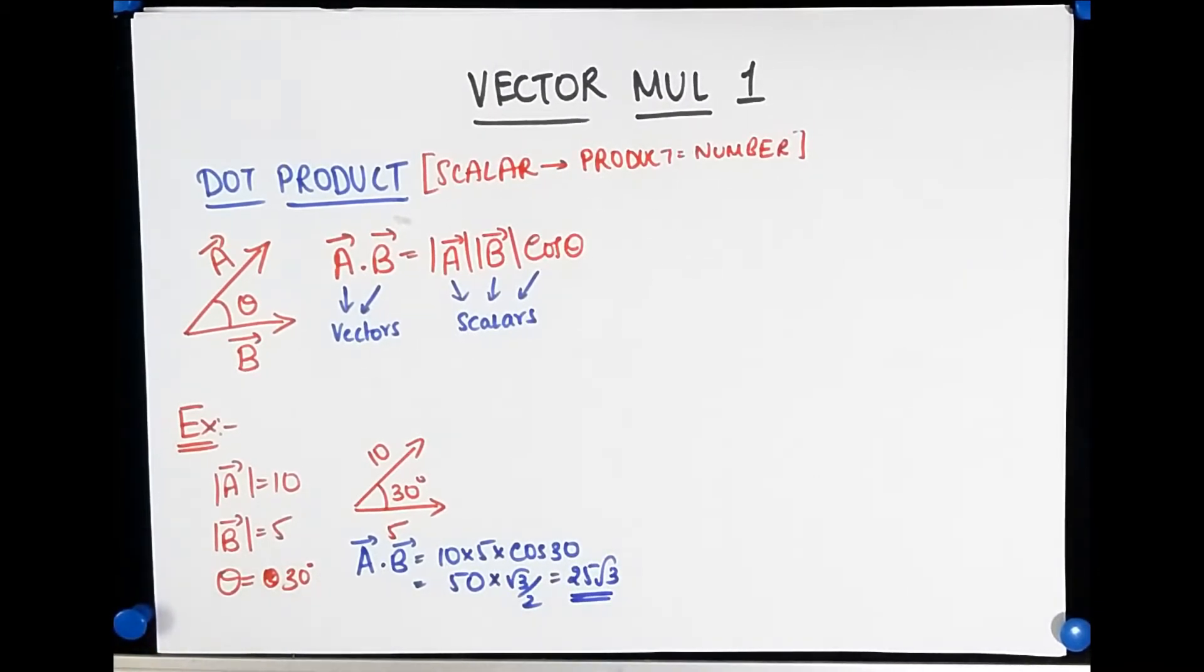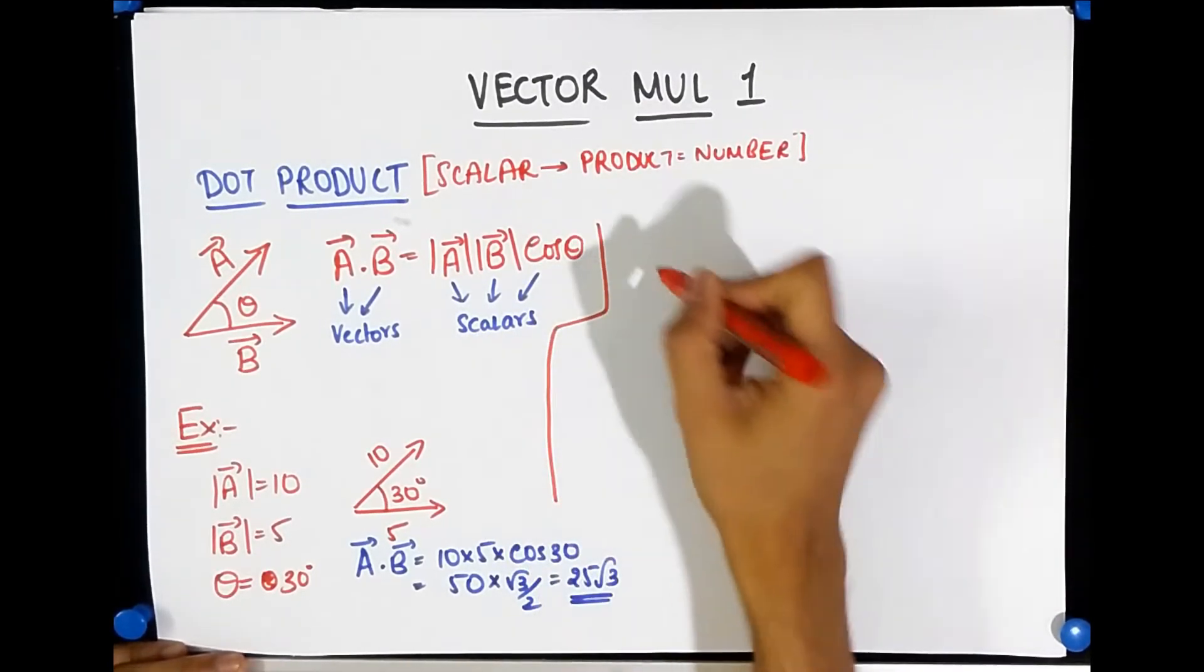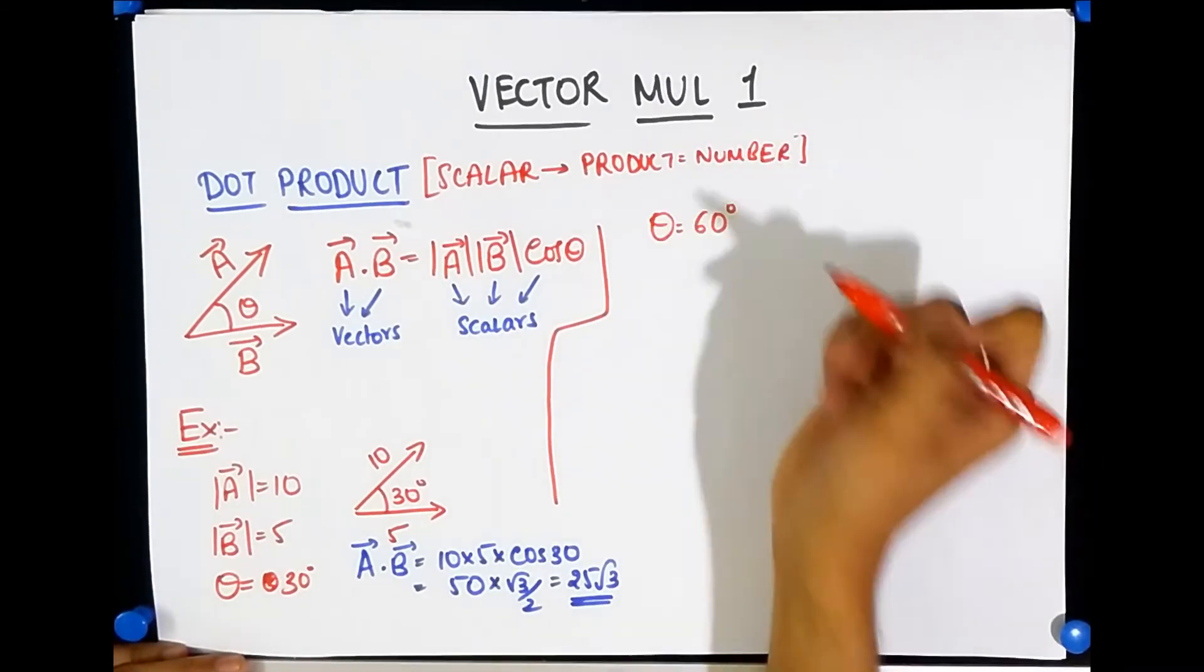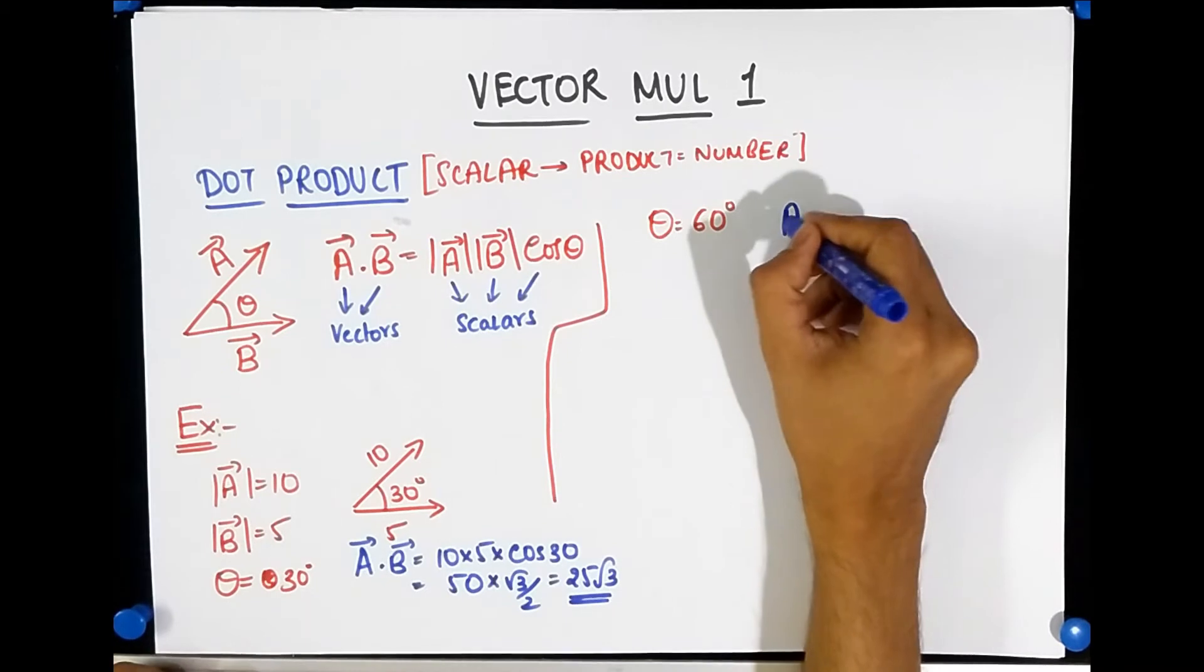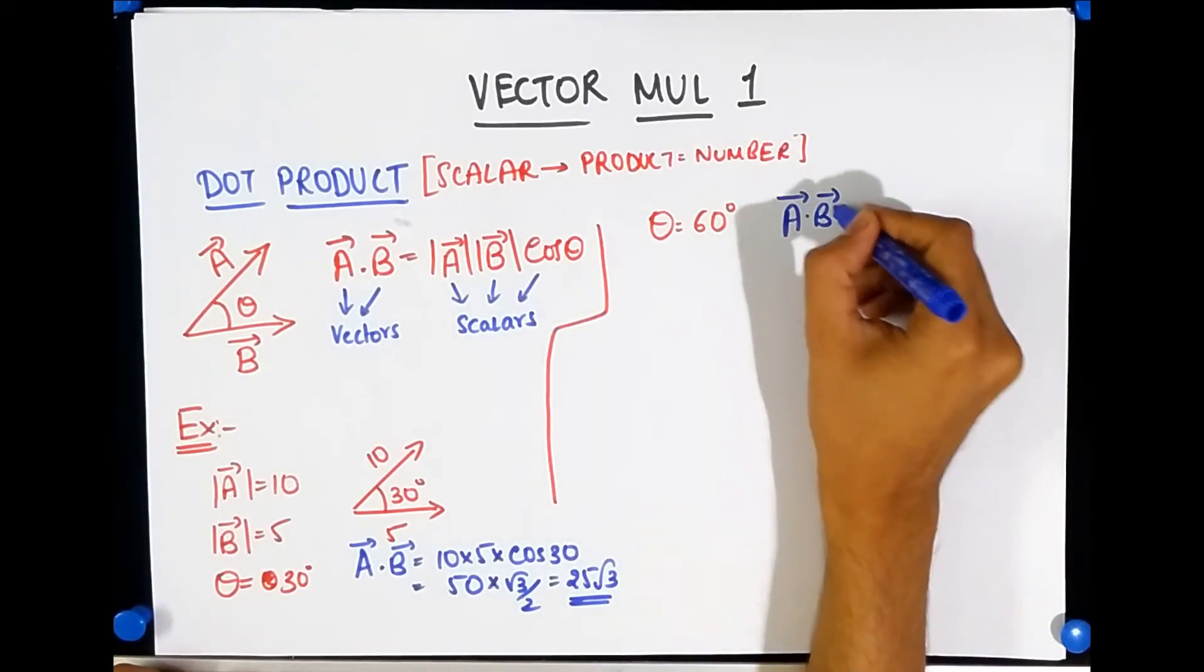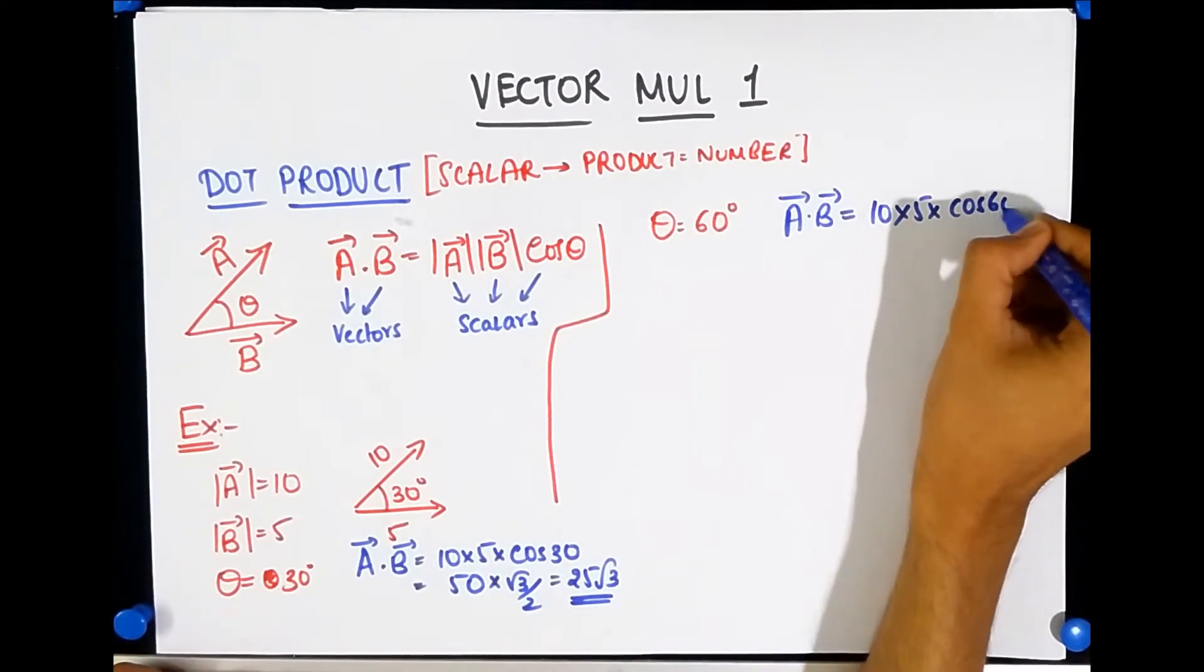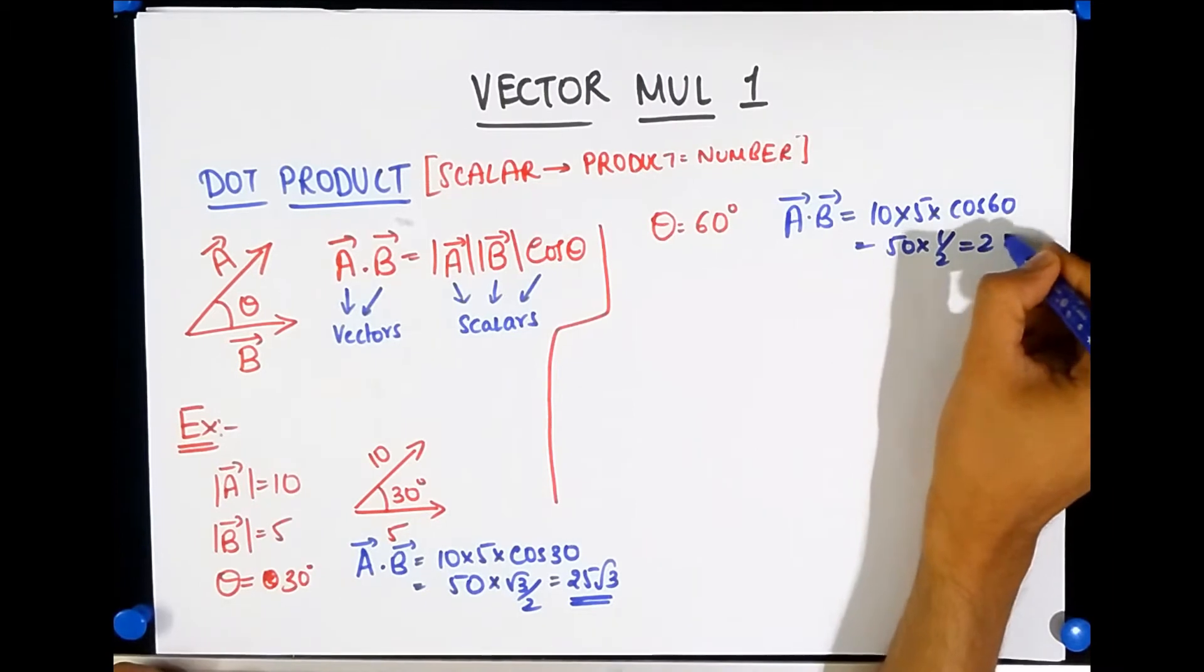Now notice what would have happened if the angle theta between them were to increase and become 60 degrees. Well, now you would see the dot product A dot B would be equal to 10 times 5 times cos 60, which means it is 50 into half, that is 25.